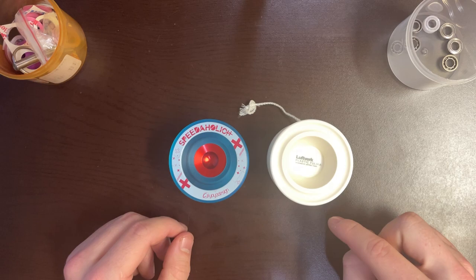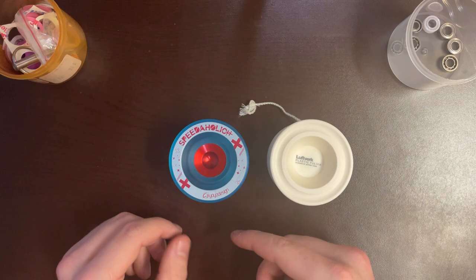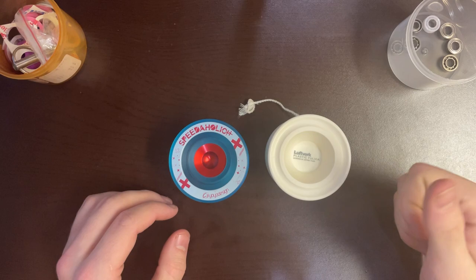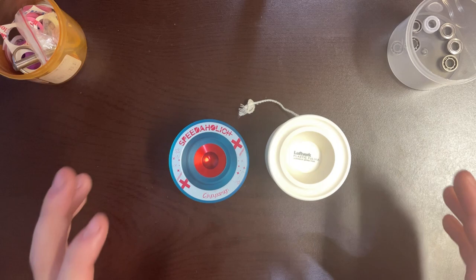Between the two, the last nail in the coffin is that the plastic Fulvia has consistent binds. Speedaholic XX has bind consistency problems for me. It's either really grippy and snags or doesn't bind with really clean binds. So I just think the plastic Fulvia is better than the Speedaholic XX. They're both great plastic yo-yos that have similar performance to metal yo-yos. But like, listen to that again. They have similar performance to metal yo-yos.